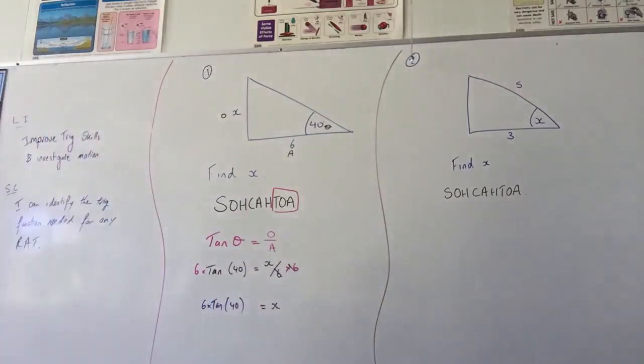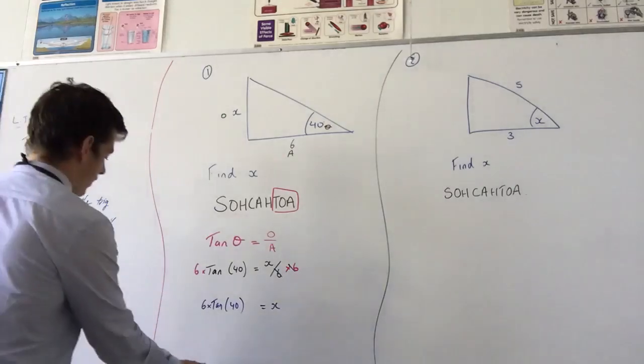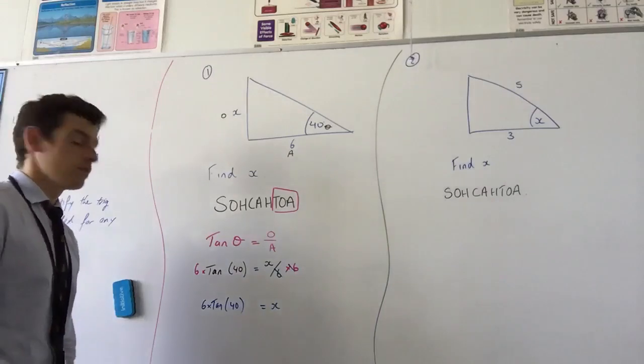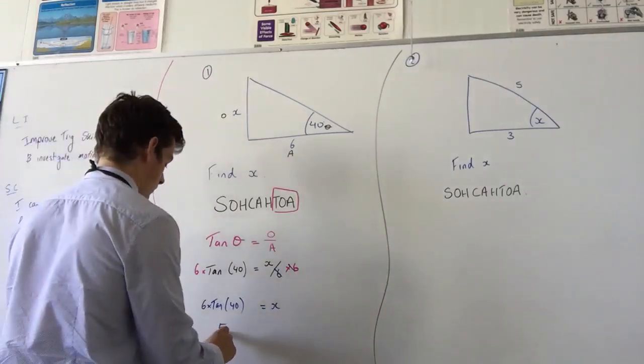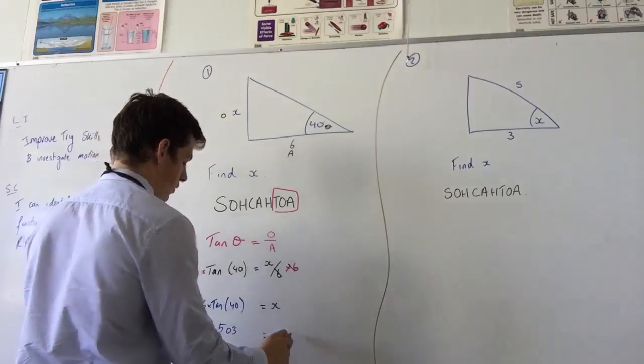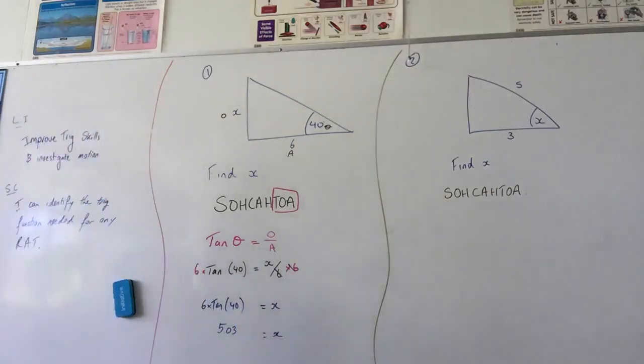Does it matter that my x is on the right and not the left-hand side? No, some people get really finicky about it. It doesn't bother me as long as it's by itself. What have we got? 5.03 equals x. Good.